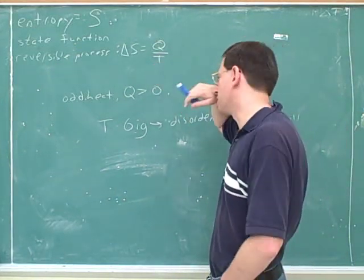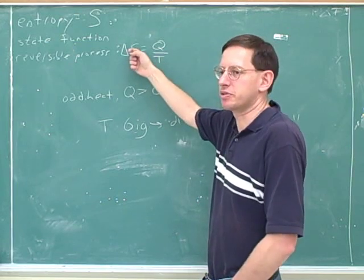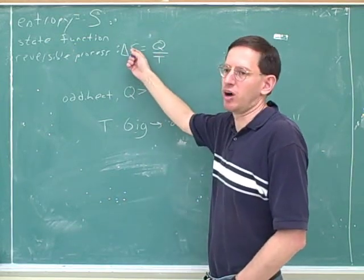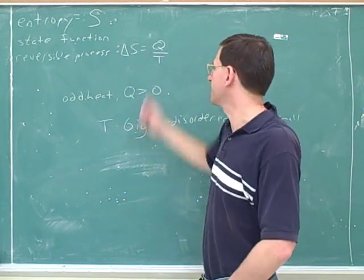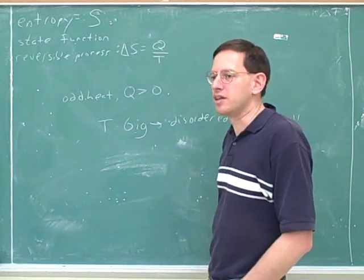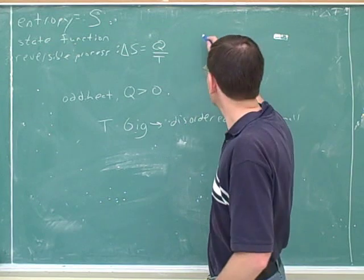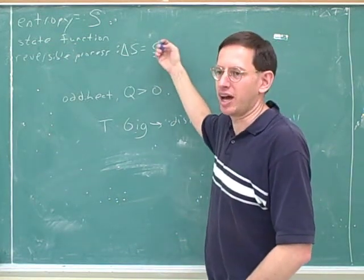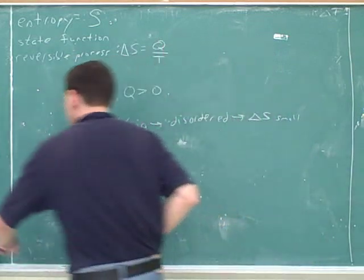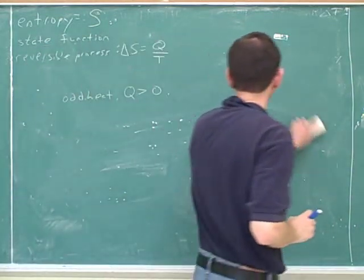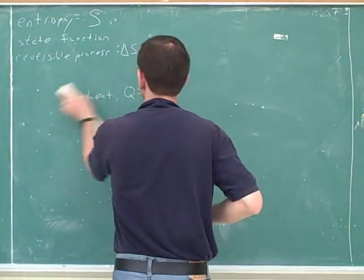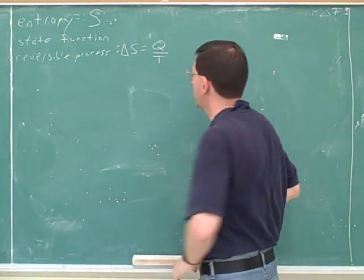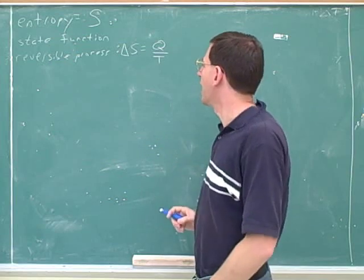When T, because when you put something in the denominator, that gives us an inverse relationship. When T is big, that tends to cause entropy changes to be small. Entropy is already so big that the heat isn't going to make much of a difference anyway. On the other hand, if T was very small, then things would be highly ordered. Even a little bit of heat would make a big difference. So there's some rough intuition for why this formula, roughly speaking, does tell you how the disorder of a system is changing.